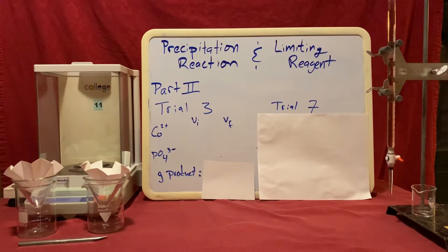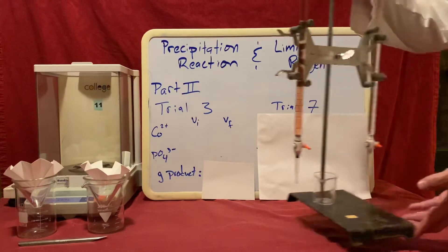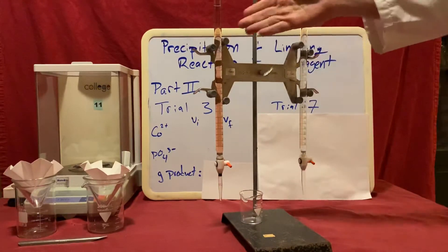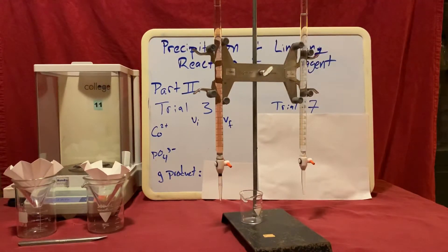Now before we begin we need to set up two burets. In this buret I have placed cobalt-2 hexahydrate. In this buret I have a solution of sodium phosphate. Both solutions in this example are 0.100 molar in concentration.